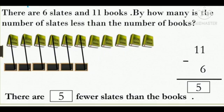Let's start. 1, 2, 3, 4, 5 and 6. So, how many pairs do we have now? Very good, children. We have 6 pairs. Let us now count the remaining books. 1, 2, 3, 4 and 5. So, 11 minus 6 is equal to 5. There are 5 fewer slates than the books.